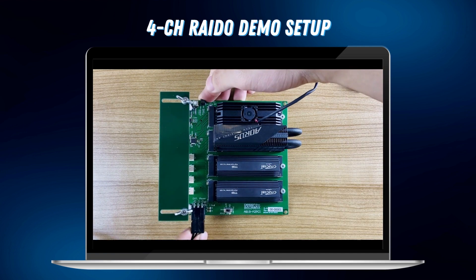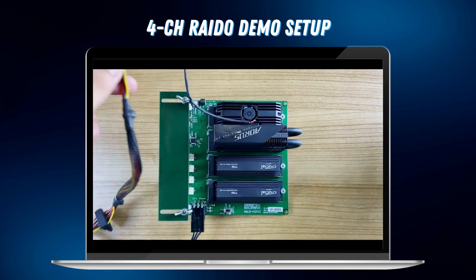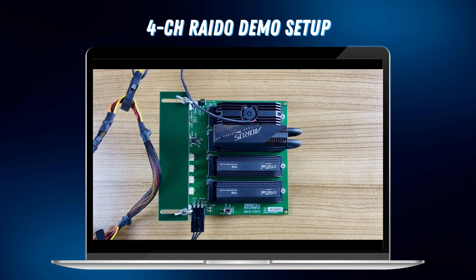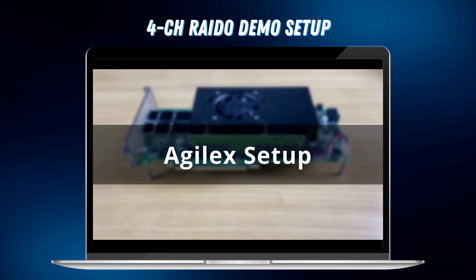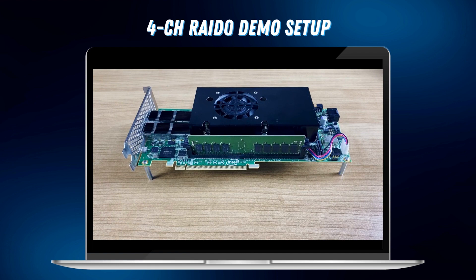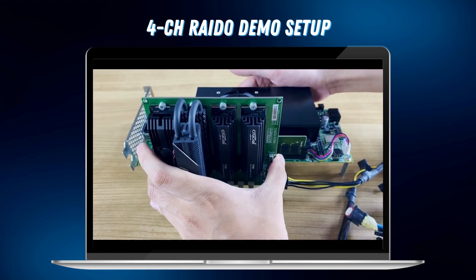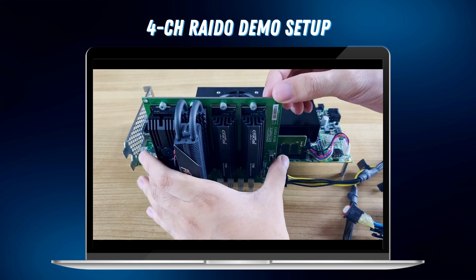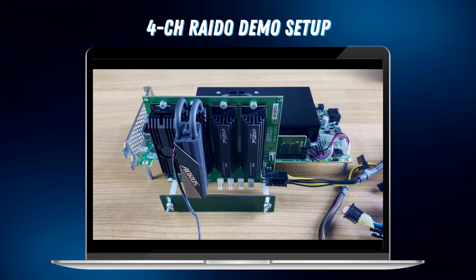Secondly, connect the PCIe power to the AB19 adapter board. Afterward, attach the adapter board to the PCIe connector on the Agilex i-Board. Adjust the height of the AB19 support board and tighten the wing nut to ensure a stable setup. Now the SSD connections are completely set up.